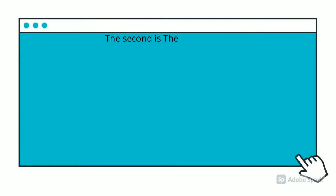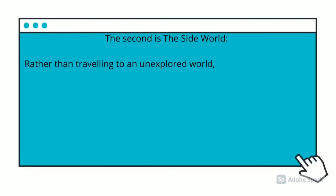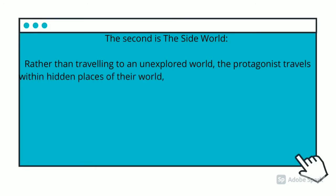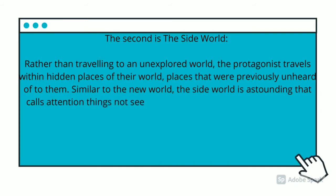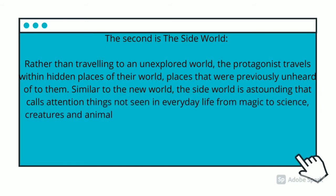The second type is the hidden world. Rather than travelling to an unexplored world, the protagonist travels to hidden places within their own world — places previously unknown to them. Similar to the new world, the hidden world calls attention to things not seen in everyday life, from magic to science, creatures, animals, and entire societies different from their own.